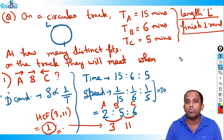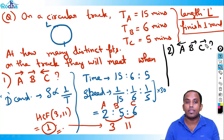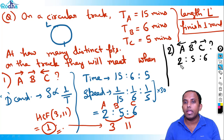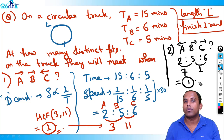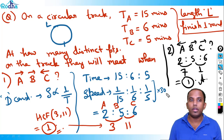Second case with the same speed ratio 2:5:6: A and B in opposite direction, B and C in same direction. A and B meet at 2 + 5 = 7 points. B and C in same direction meet at 6 minus 5 = 1 point. HCF of 7 and 1 is 1. Answer is again 1 point.